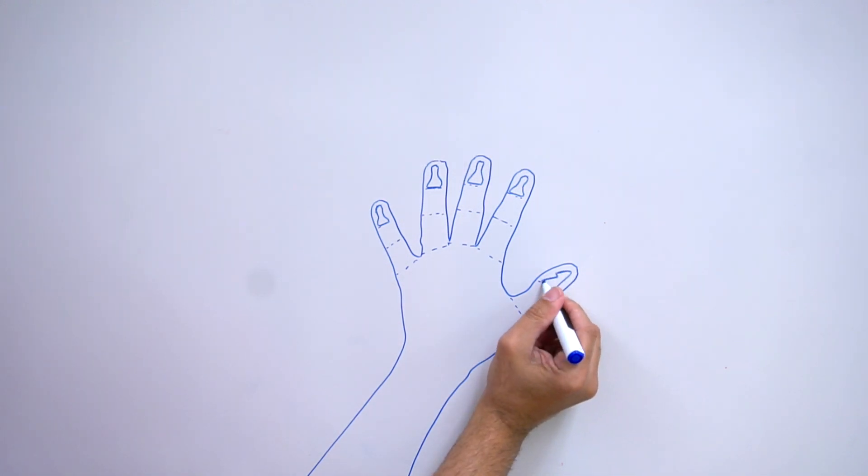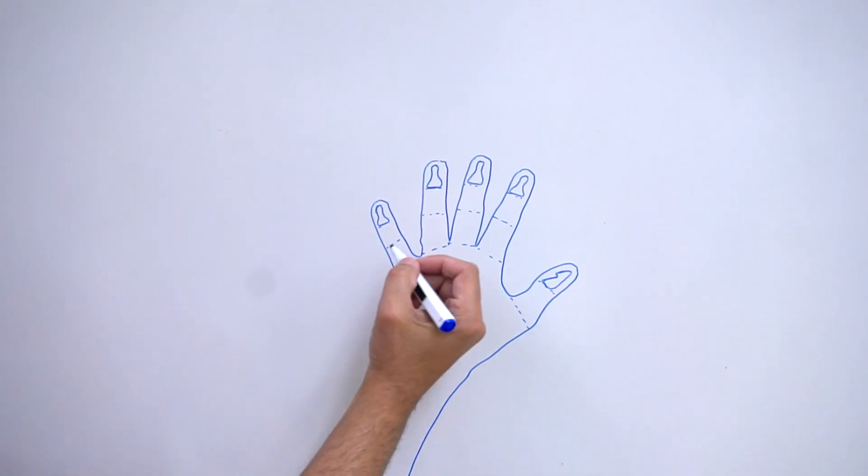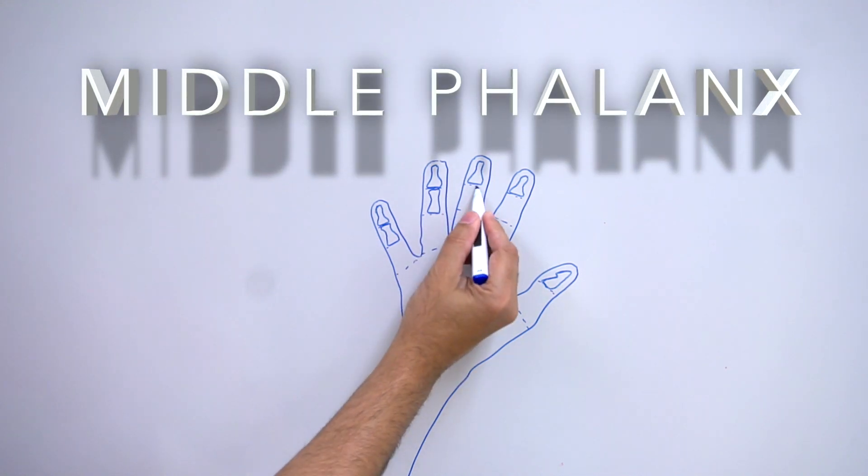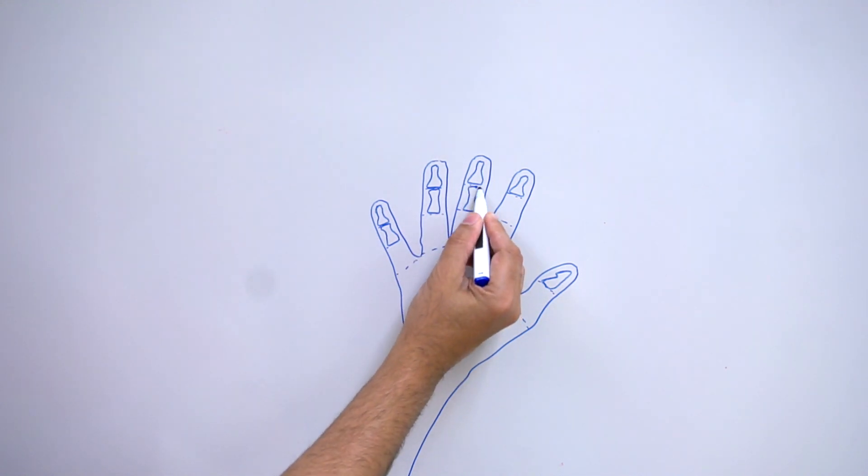Now we're going to go for the middle ones, so not too big, not too small, so middle size. These are called the middle phalanx, just a little longer than the ones previously.